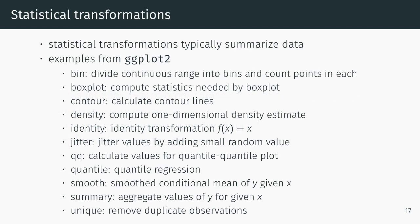Statistical transformations typically summarize data. Here are examples: bin divides continuous range into bins and counts points in each; box plot computes the median and fences for quartiles and outliers; contour lines calculation; density estimate; identity transformation; jittering by adding small random values; q-q plot; quantile regression; smooth conditional mean of y given x; aggregate values of y given x; and unique for removing duplicate observations.